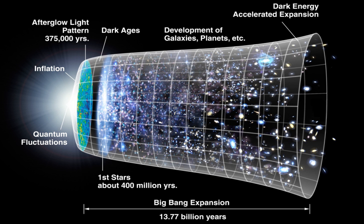The Big Bang theory depends on two major assumptions: the universality of physical laws and the cosmological principle. The cosmological principle states that on large scales the universe is homogeneous and isotropic. These ideas were initially taken as postulates, but today there are efforts to test each of them. For example, the first assumption has been tested by observations showing that the largest possible deviation of the fine structure constant over much of the age of the universe is of order 10⁻⁵.